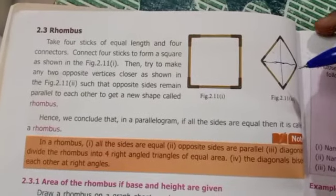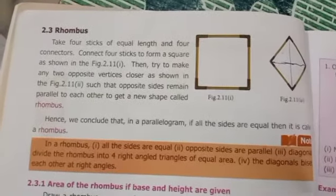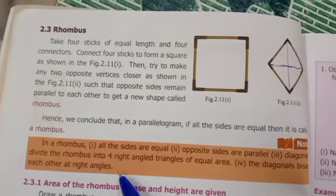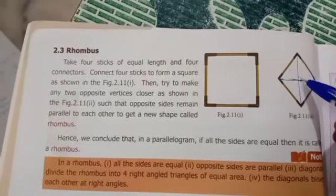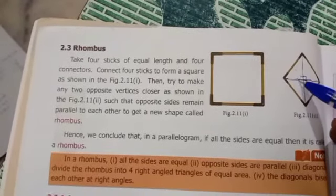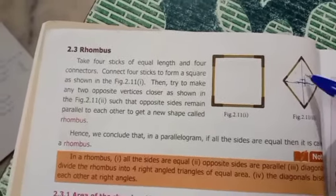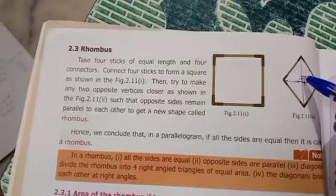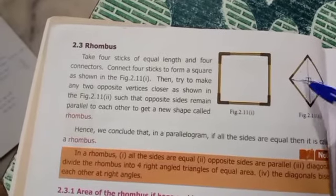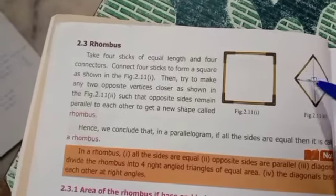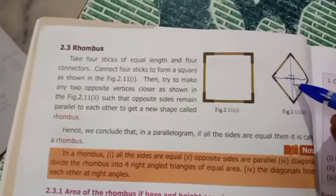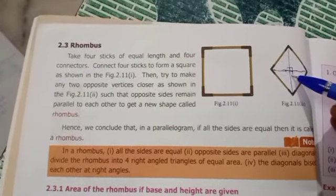The diagonals bisect each other at right angles. Right angle means it looks like an L shape — perpendicular. These two are perpendicular, these two are perpendicular, these two are perpendicular. So it is 90 degrees.